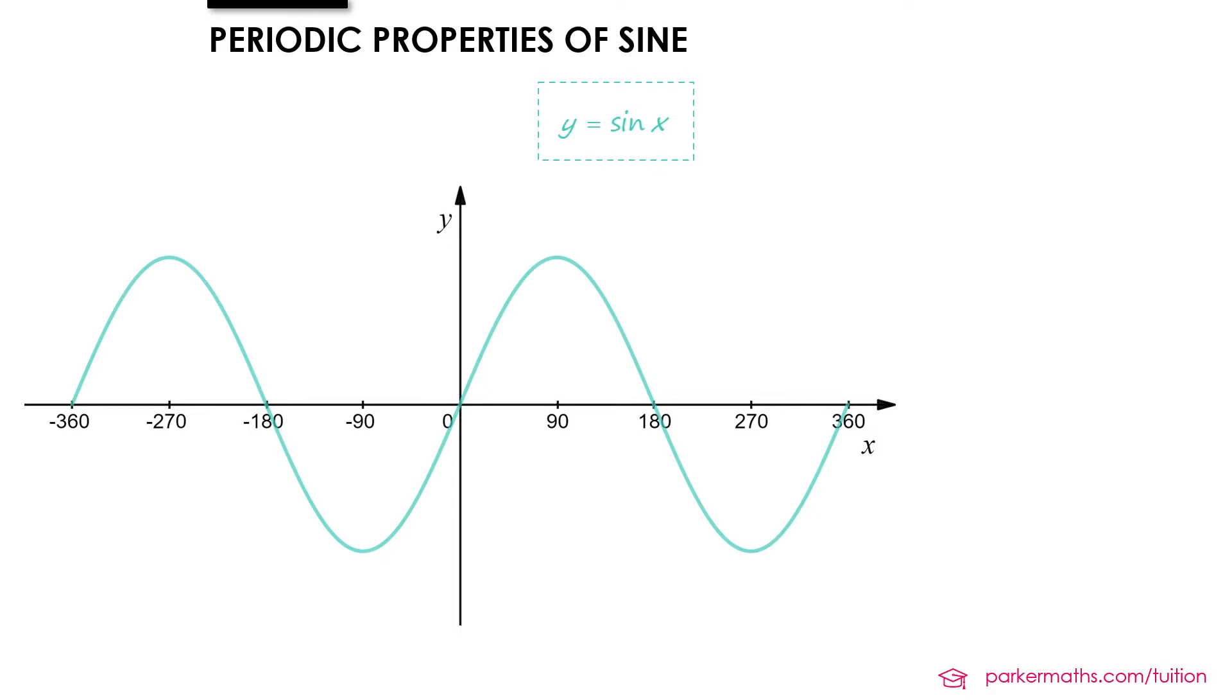The periodic properties of sine, cos and tan describe how often the graph repeats itself.